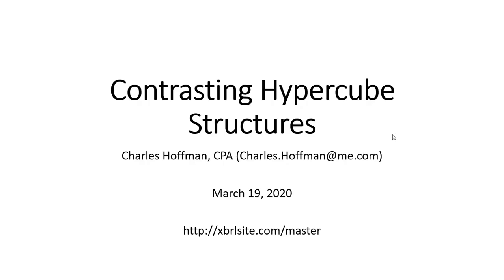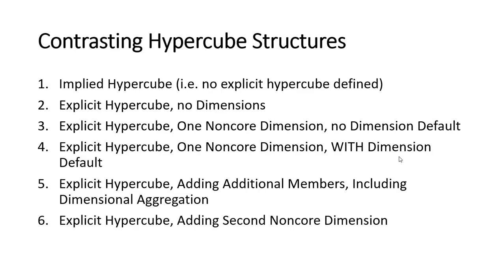In this video, I want to walk people through some things that might not be evident that pertain to hypercubes. I'm going to show you multiple hypercube structures and contrast them. There are six hypercube structures I'm going to show you. The meaning of the information is the same in every one of the six hypercubes — the meaning is exactly the same. Number five and number six add more information, but it doesn't change the base information.